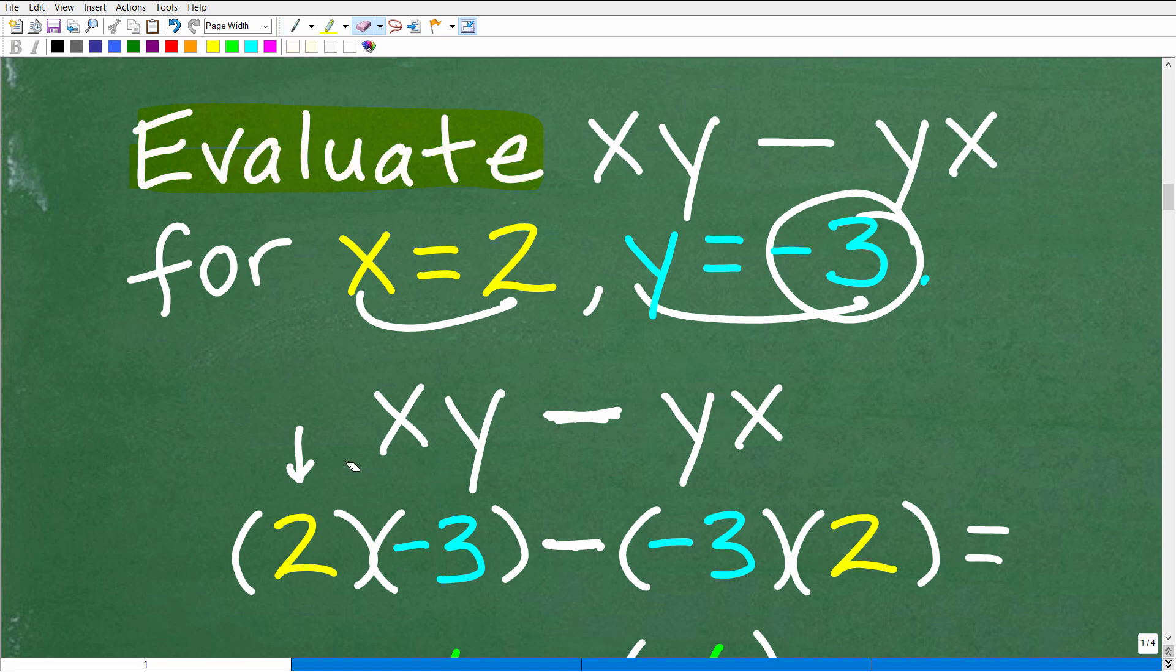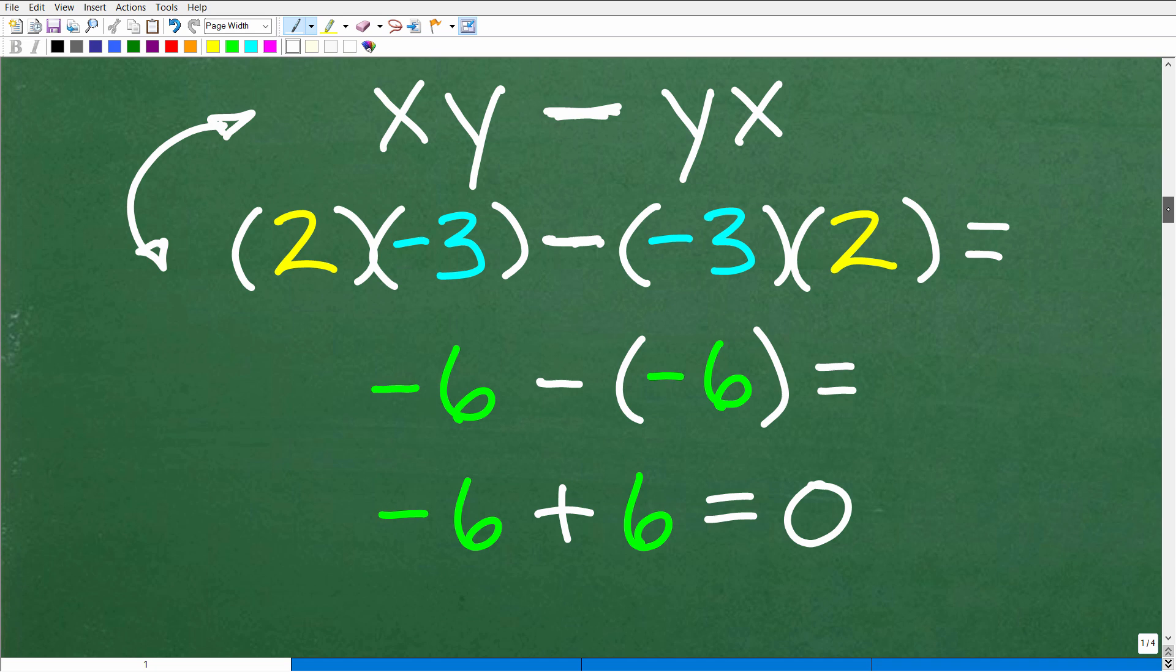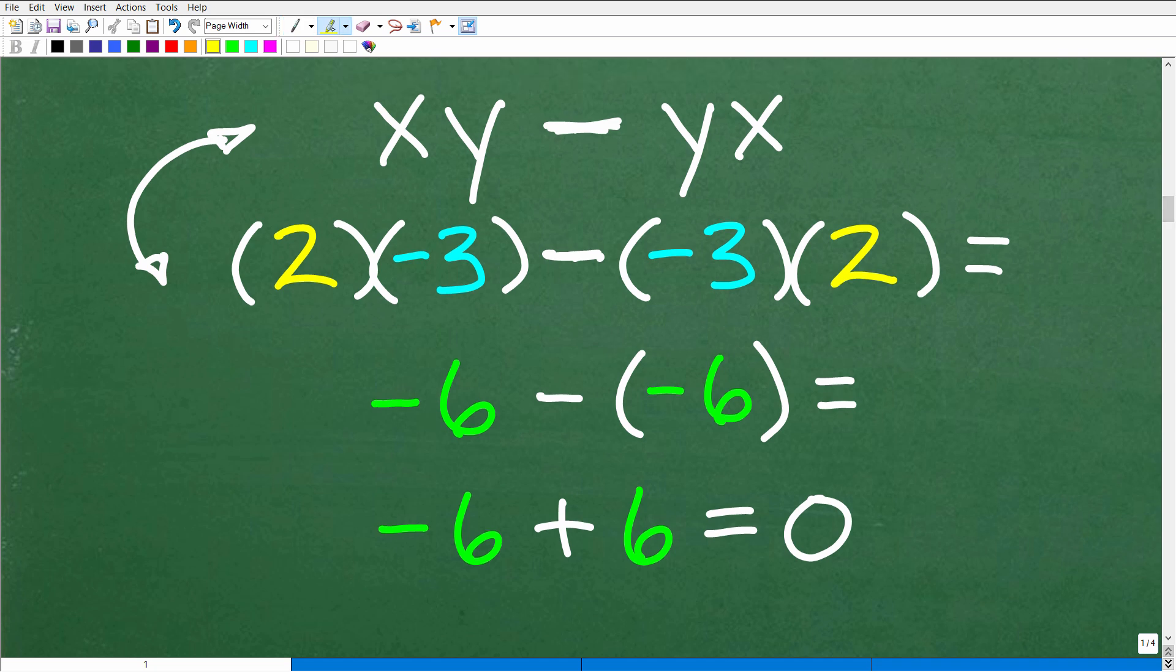The first thing you want to do is always use parentheses when you're plugging in values. After you do this, do not just start simplifying the remaining numeric expression. You want to double check. Say: did I plug everything correctly? Make any corrections as needed. But if you're confident that you plugged in the respective numeric values for the variables, then you can start simplifying this.